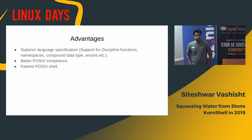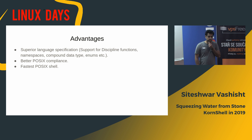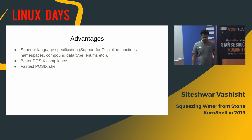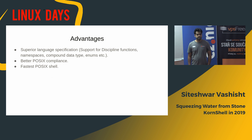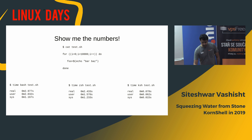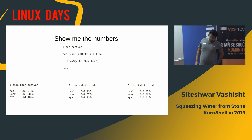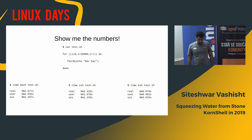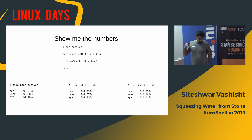It turns out that even though KSH is an old shell — older than Bash — it still has a superior language specification. The language specification of KSH is large and powerful. It still has better POSIX compliance and it is still the fastest POSIX shell. Let's look at another example: a simple script that runs a for loop 10,000 times and runs a subshell inside the for loop.